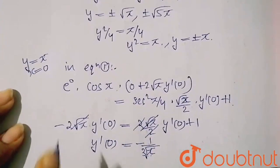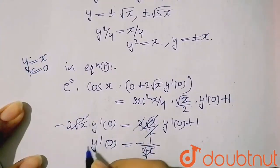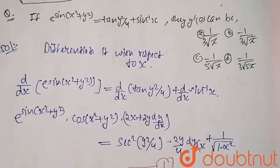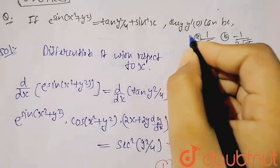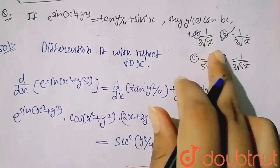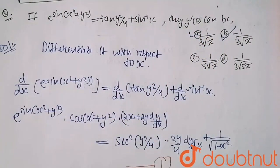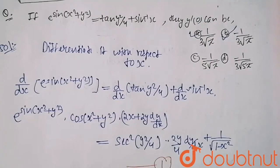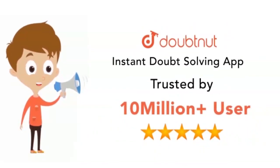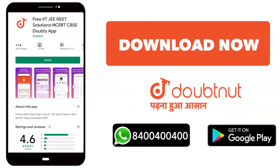So both values will be possible for y'(0). From the options, both option A and option B will be correct. Your y'(0) equals 1/(3√π) and also -1/(3√π). Thank you.